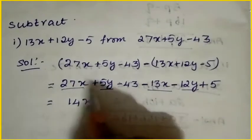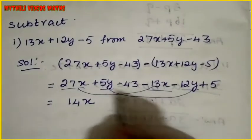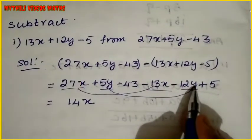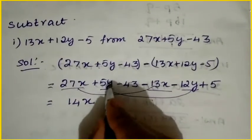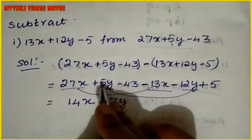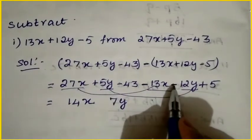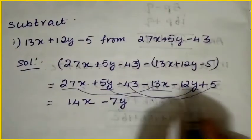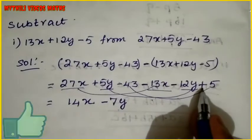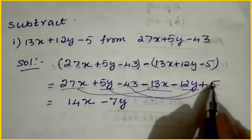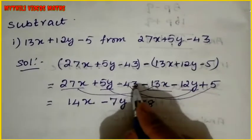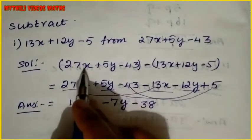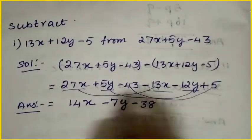Now for the y term: we have plus 5y and minus 12y. They have different symbols, so we subtract. 12 minus 5 equals 7. The bigger number is 12, which has a minus symbol, so we write minus 7y. For the constant term: minus 43 and plus 5. Subtract: 43 minus 5 equals 38. The bigger number is 43 with minus, so the answer is minus 38. So the final answer is 14x minus 7y minus 38.